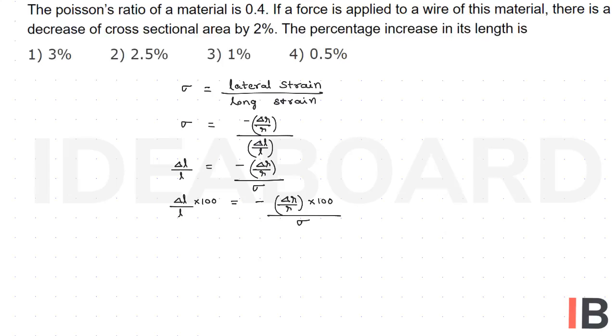But we know area of cross-section A equals pi R square, so A is proportional to R square. Taking the partial derivation, delta A by A equals 2 times delta R by R.